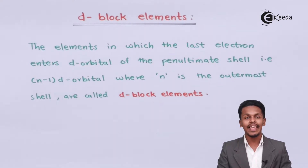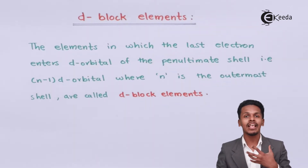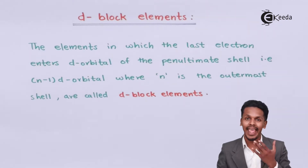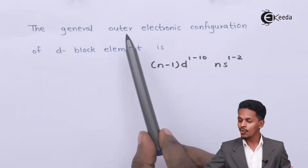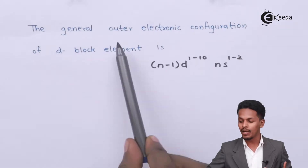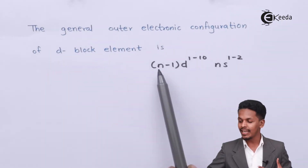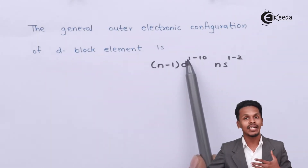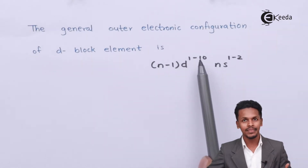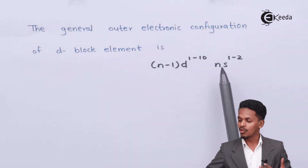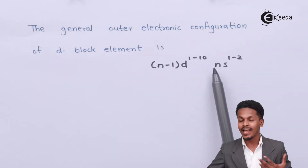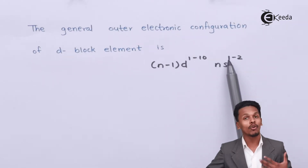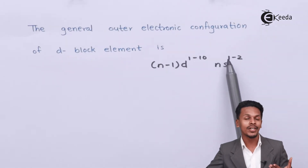Based on that, the general outer electronic configuration for a D block element is (n-1)d orbital which consists of 1 to 10 electrons, and the ultimate shell — the last shell — consists of the s orbital which can occupy 1 to 2 electrons.